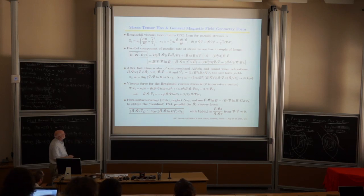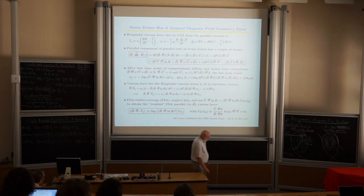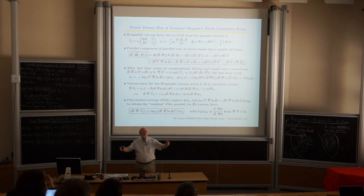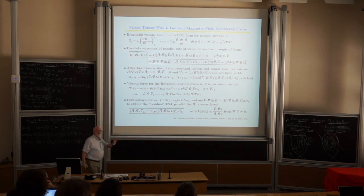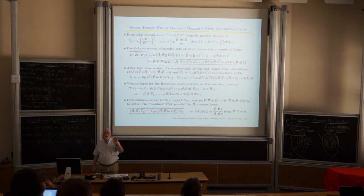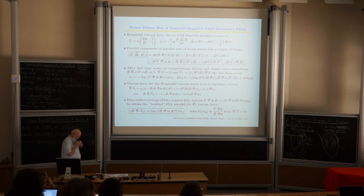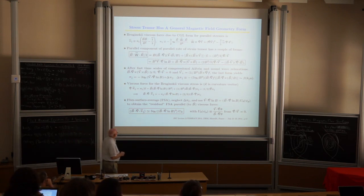I like to take the flux surface average — that just averages over the bounce length, the periodicity length. When doing an extended MHD code, you want everything local. But analytically, we average over a bounce or periodicity length to calculate things. The flux surface average has the nice property that it annihilates parallel derivatives: the flux surface average of B·grad of a scalar function vanishes.